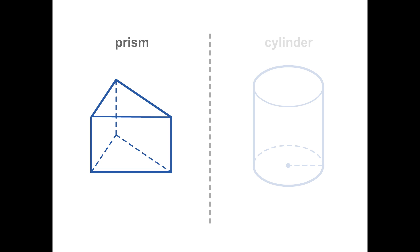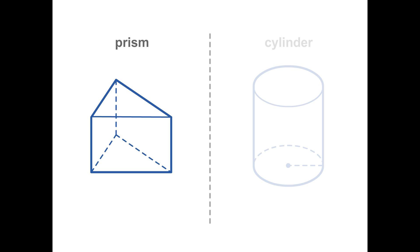In a prism, the bases are congruent figures in parallel planes. The lateral faces are the faces that are not bases. In a right prism, these lateral faces are rectangles. Two lateral faces intersect at a lateral edge. In a right prism, lateral edges are altitudes since they are perpendicular to the bases.